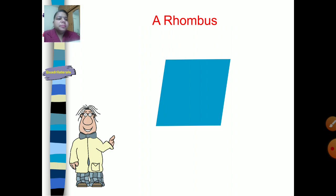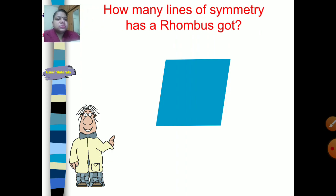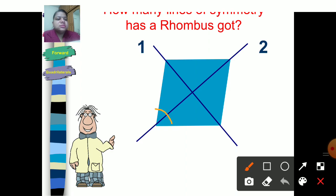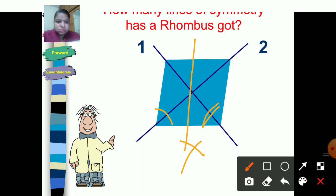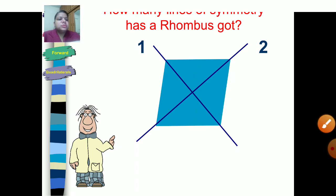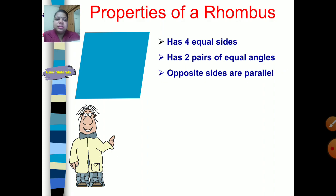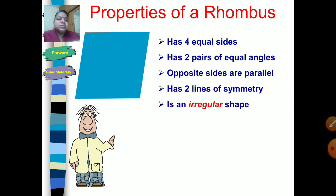This is a parallelogram in which all sides are equal — this is a rhombus. The lines of symmetry are the two diagonals. Note that the horizontal line through the middle is not a line of symmetry because the base angles are not the same — when you fold along it, the parts won't coincide. A rhombus has four equal sides, both pairs of opposite sides are parallel, two lines of symmetry, and is an irregular shape because the angles are not all equal.